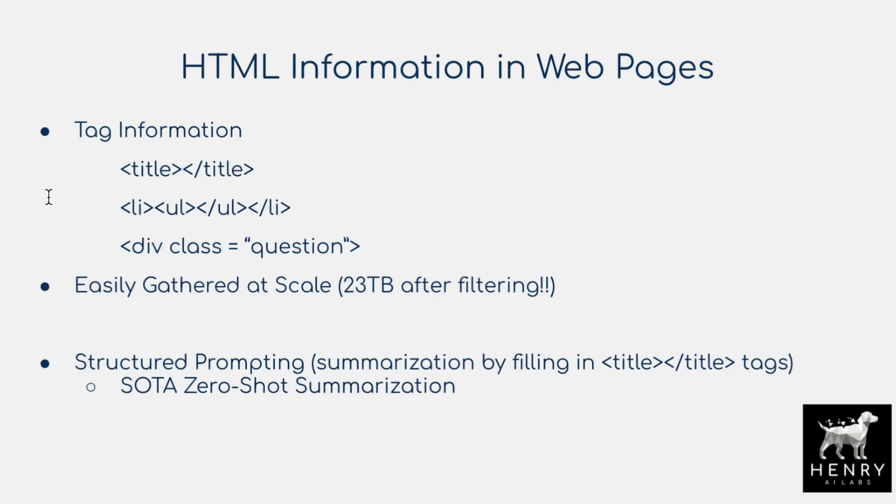We have datasets like C4, the Colossal Common Crawl Corpus, used to train models like T5, where you clean away all the HTML and then train on just the text data from these web pages. But what this paper shows is that keeping this HTML can be a really useful signal for pre-training language models.